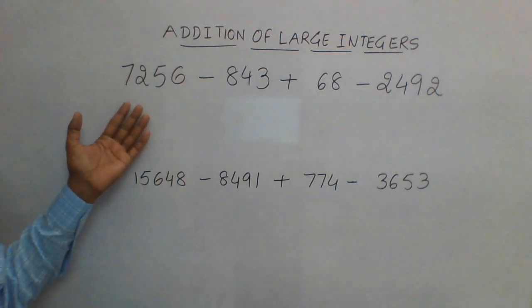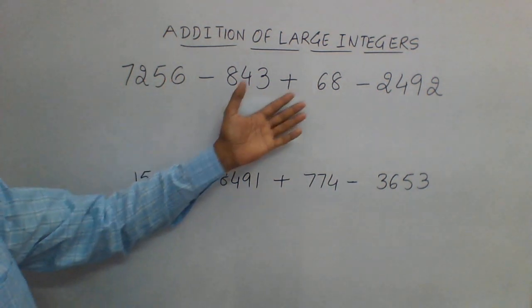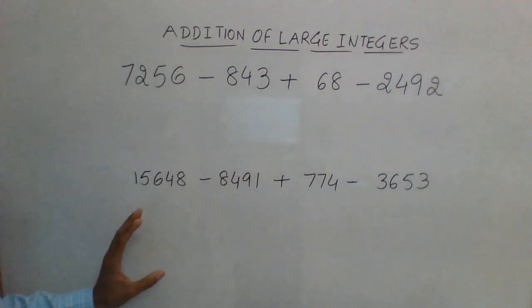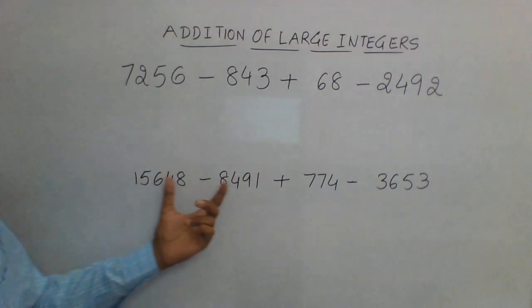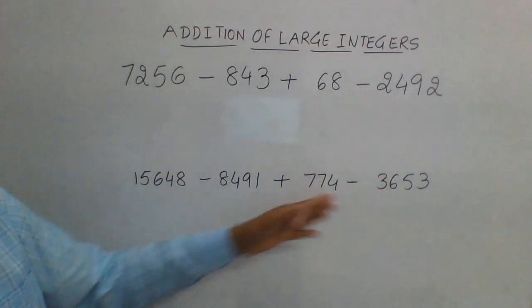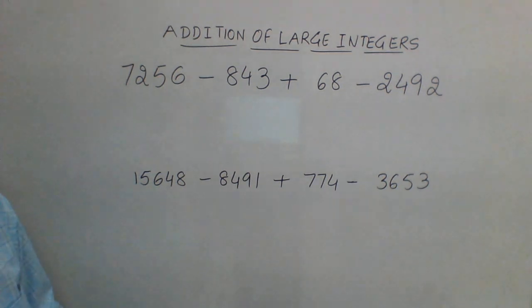You can see 7856 minus something plus something and minus something. Likewise, I've taken another example: a 5-digit, 4-digit, 3-digit, 4-digit number, so the digits are also differing in the problem.